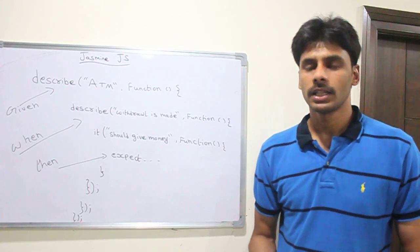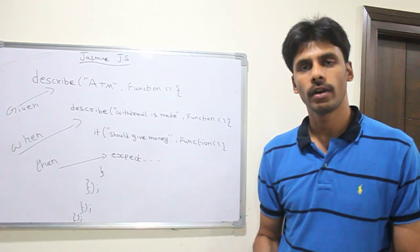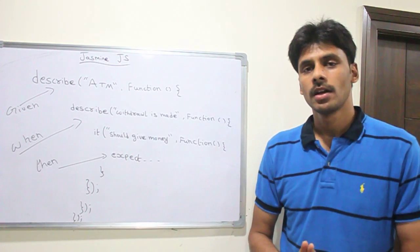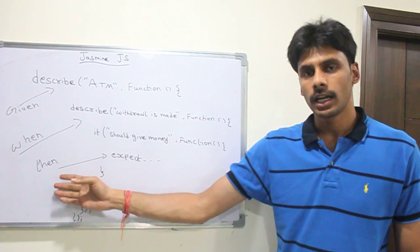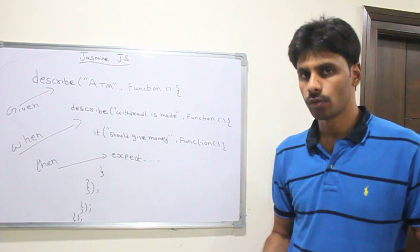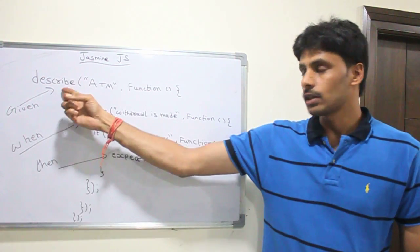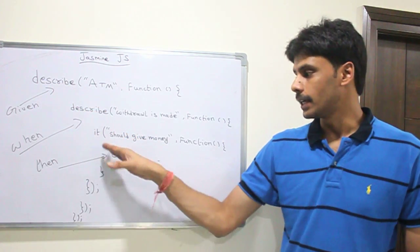To quickly summarize, Jasmine is a behavior driven development framework for JavaScript world and it provides us the syntax for given, when, then, which the BDD asks us to follow by giving us functions like describe, it, and expect.